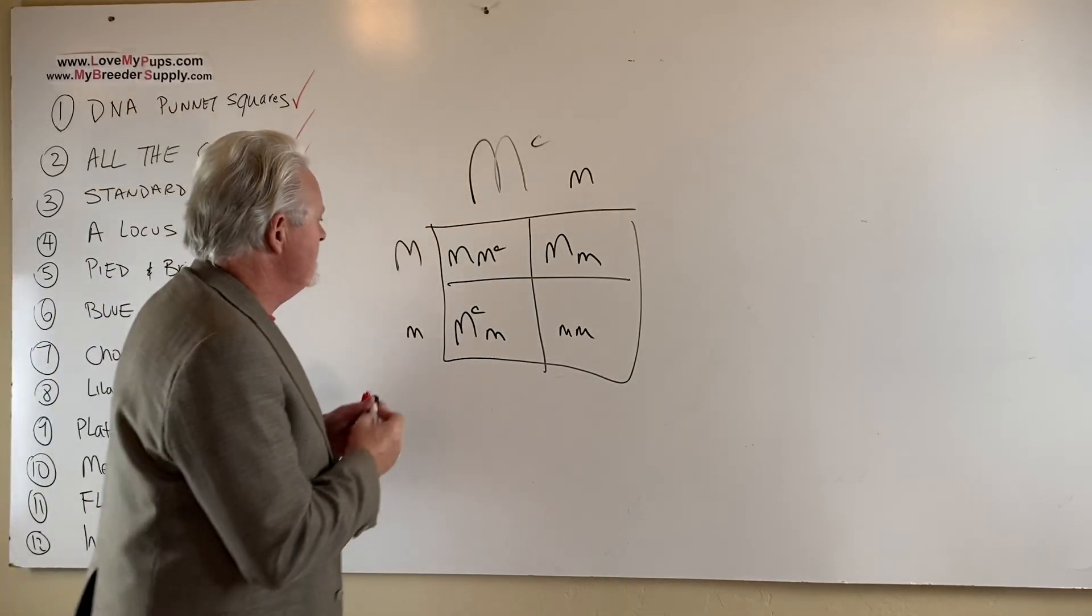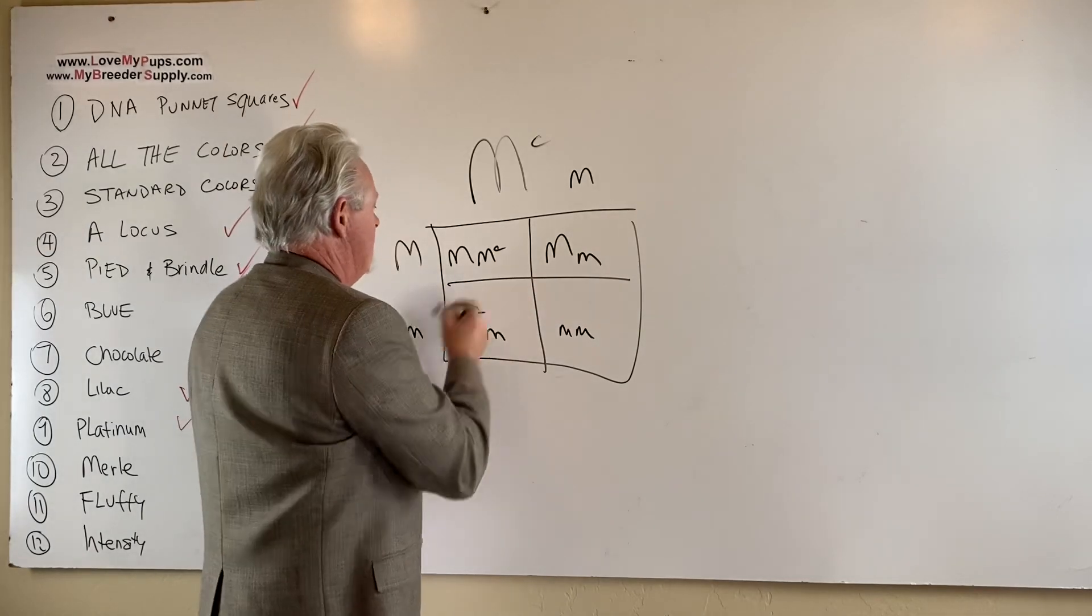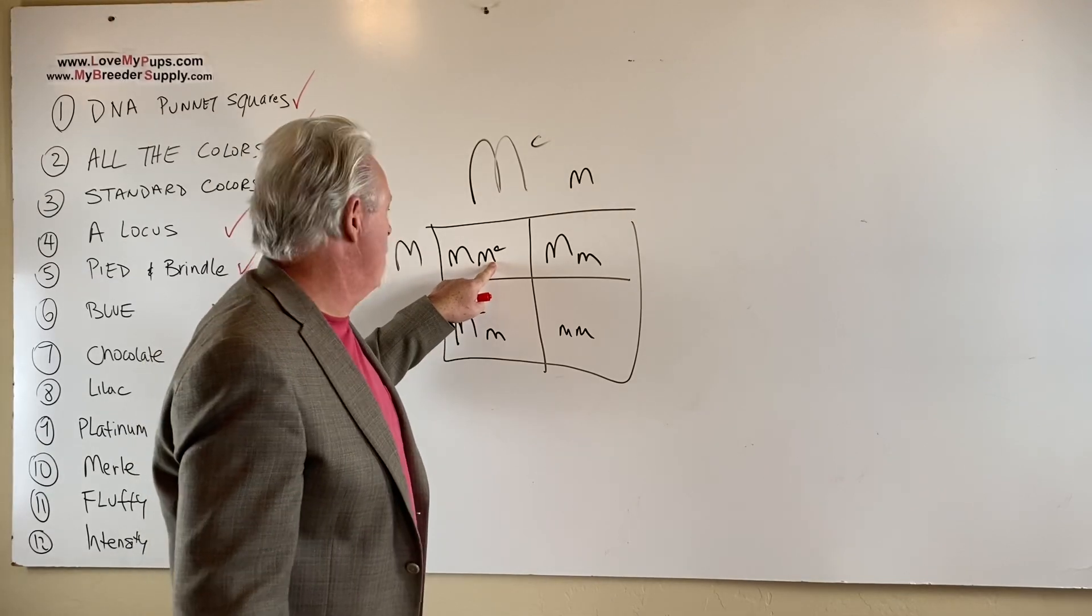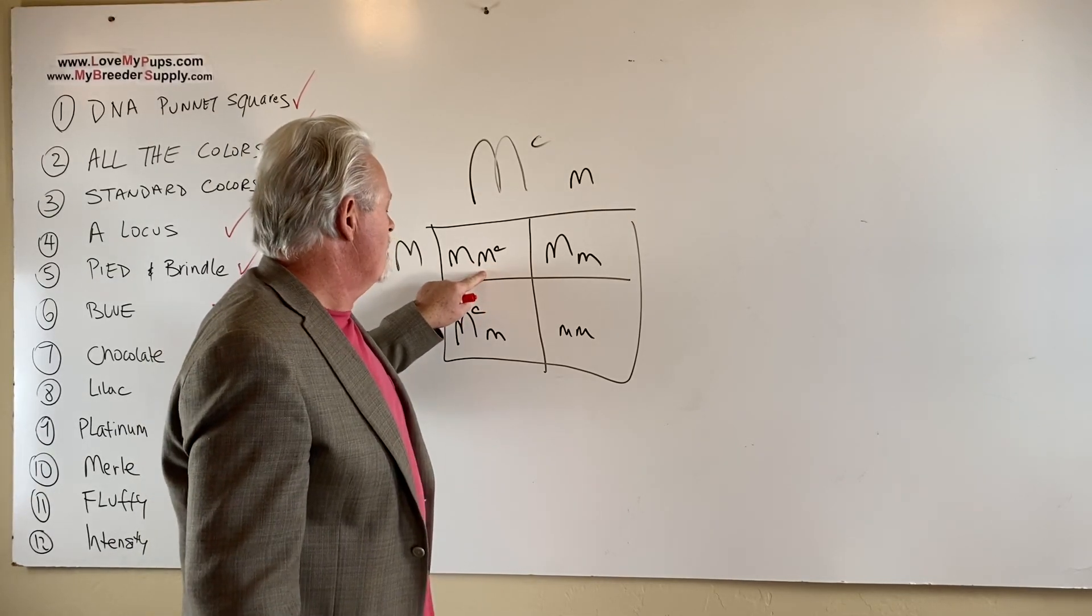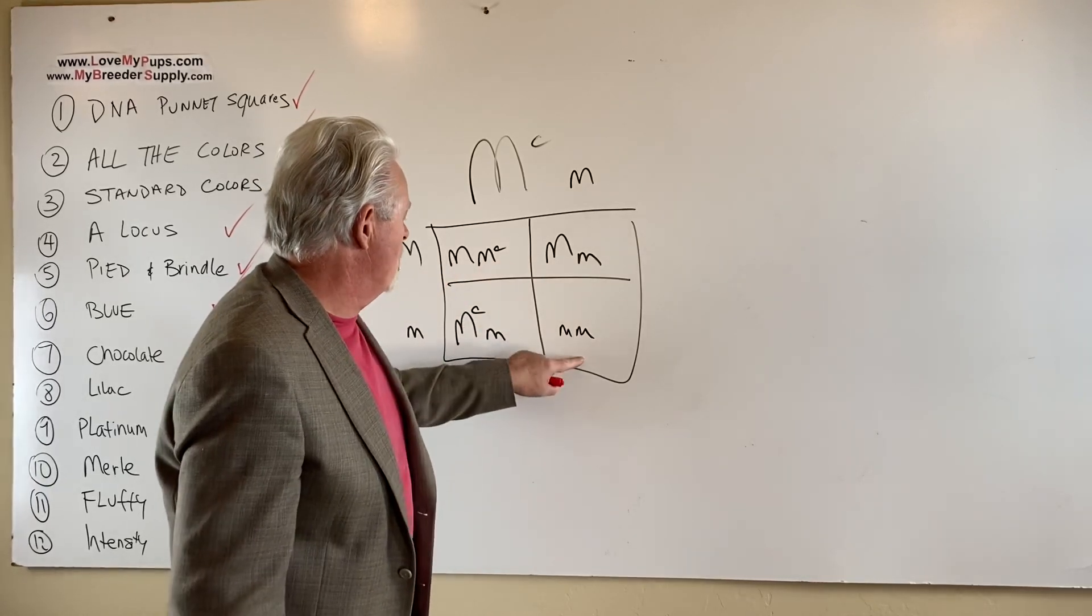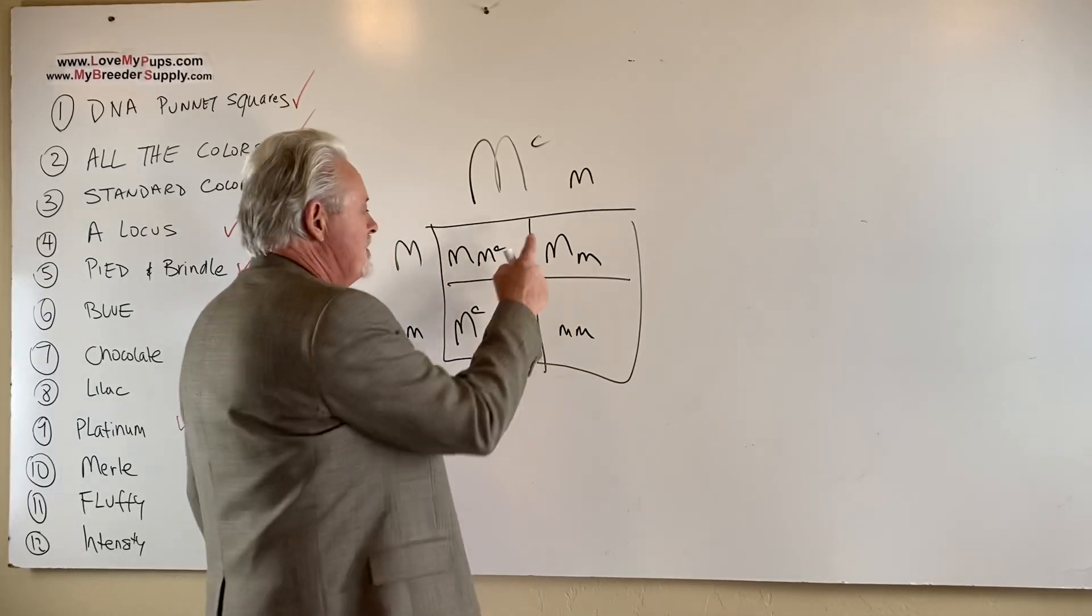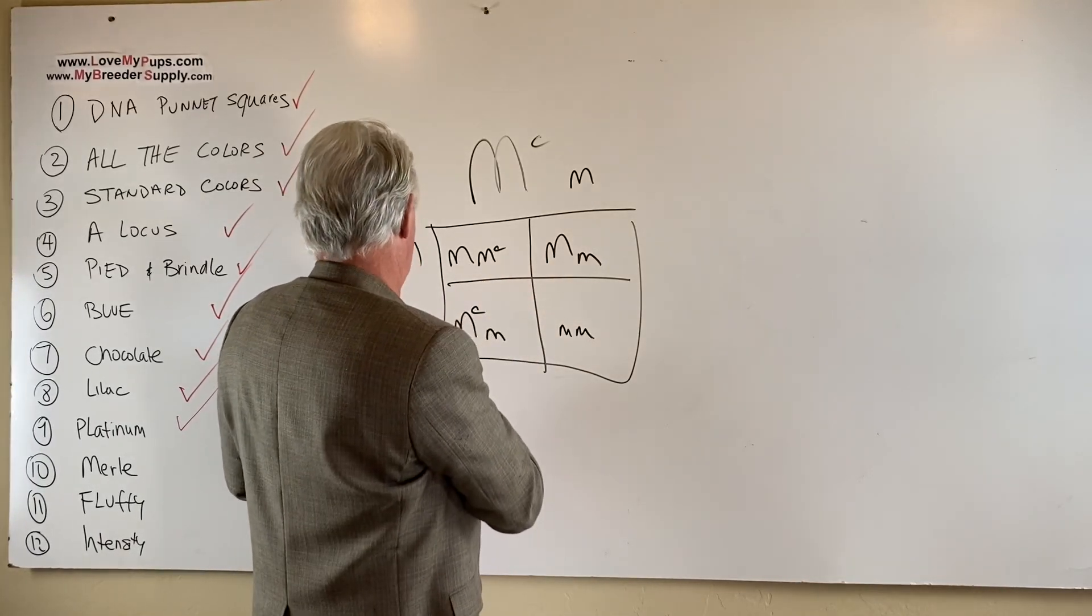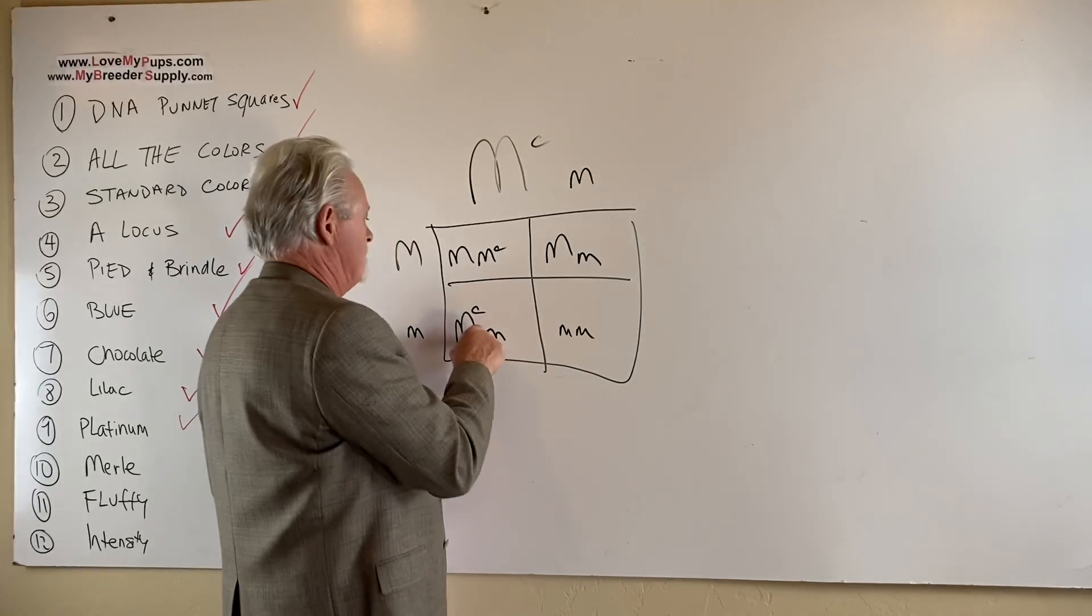This dog here, here's your double Merle, but it's a cryptic Merle. Supposedly you only have a four percent problem of having problems when you do this. So this is the danger zone right here. This is a non-Merle. This is a Merle. This is a cryptic Merle.